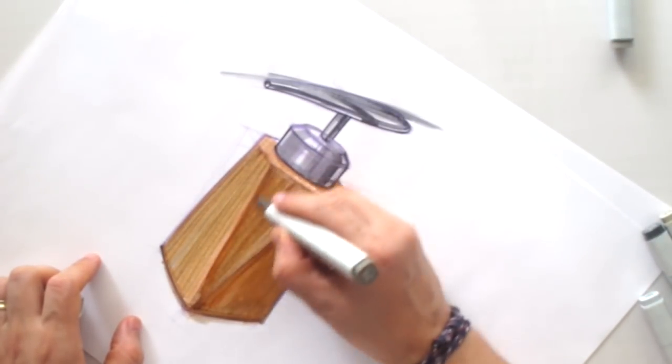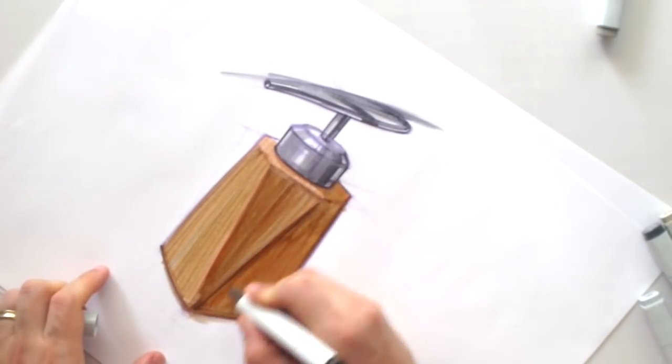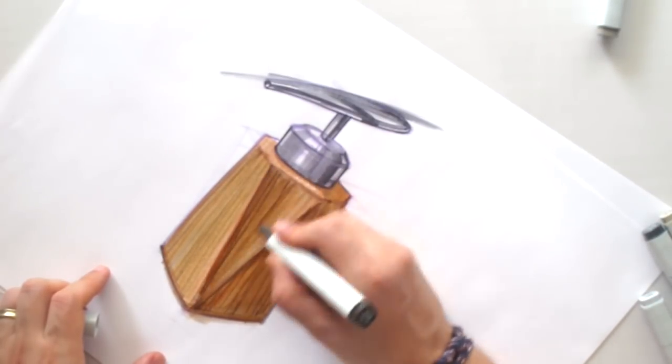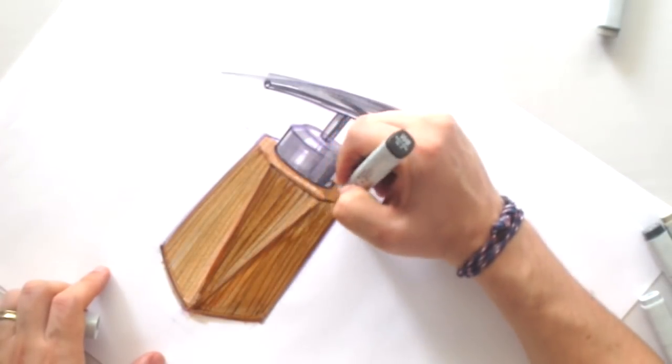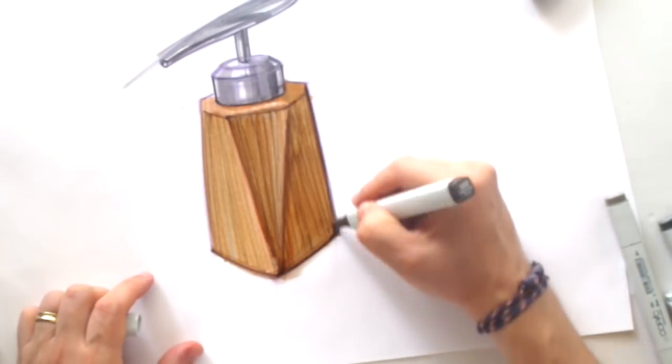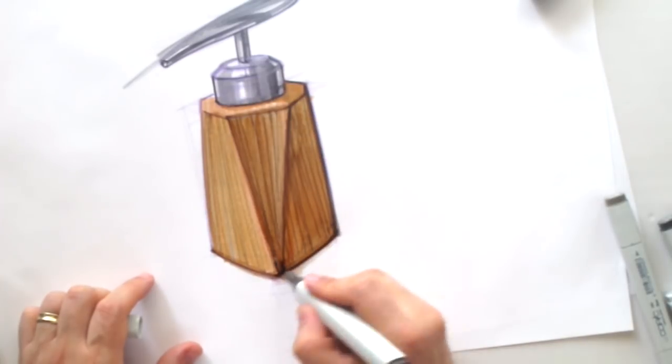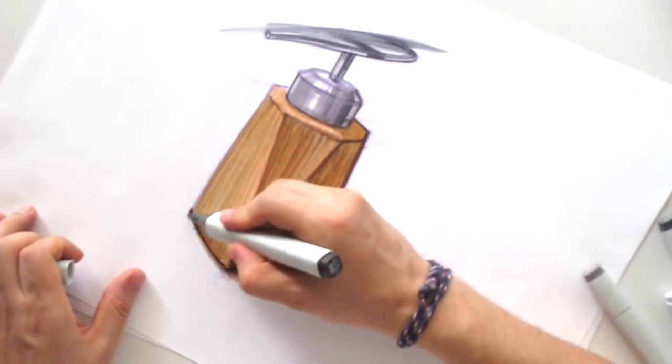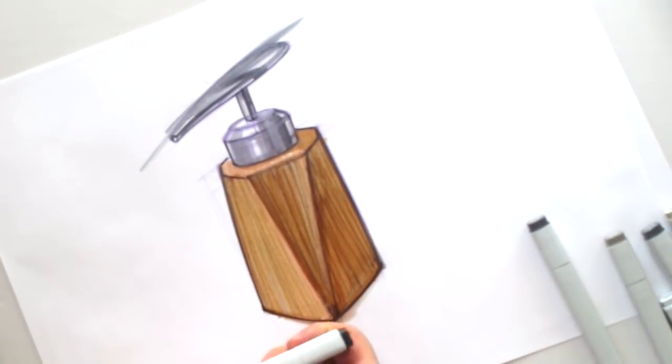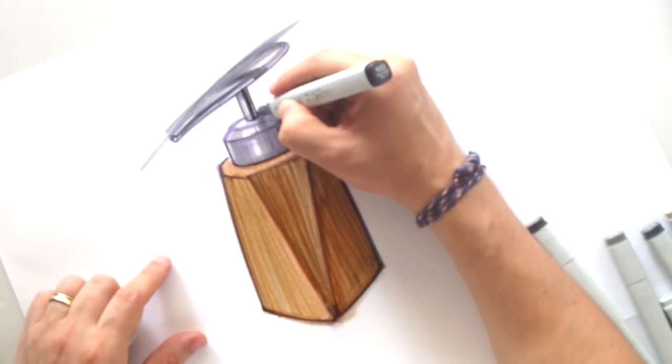This darker marker, I can create the texture, the texture of the wood. Like this. And at the same time, to do the contour. The contour and the shadows underneath of the object. I want that my object will pop up from the paper, from the white page.